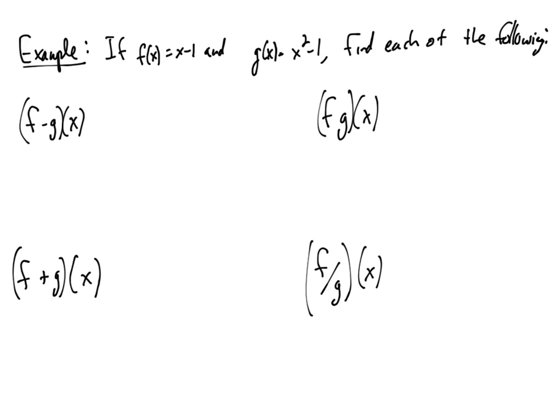Alright, if we have two functions f of x equals x minus 1 and g of x equals x squared minus 1, find each of the following.